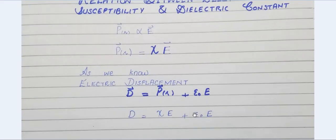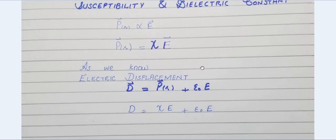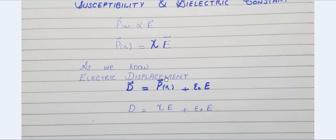Proceeding further, I have written the electric displacement D. The expression for electric displacement is D = P + ε₀E, where ε₀ is the permittivity of free space multiplied by E, added to polarization P. Substituting the value of polarization P = χE from the previous equation, we get the next expression.